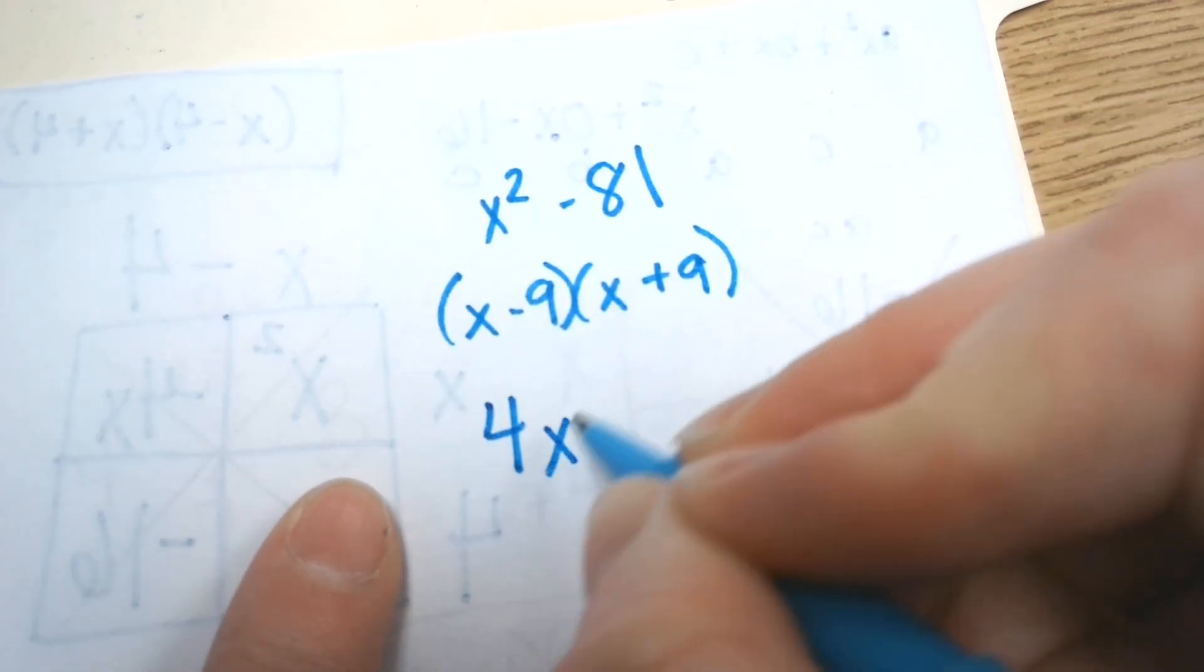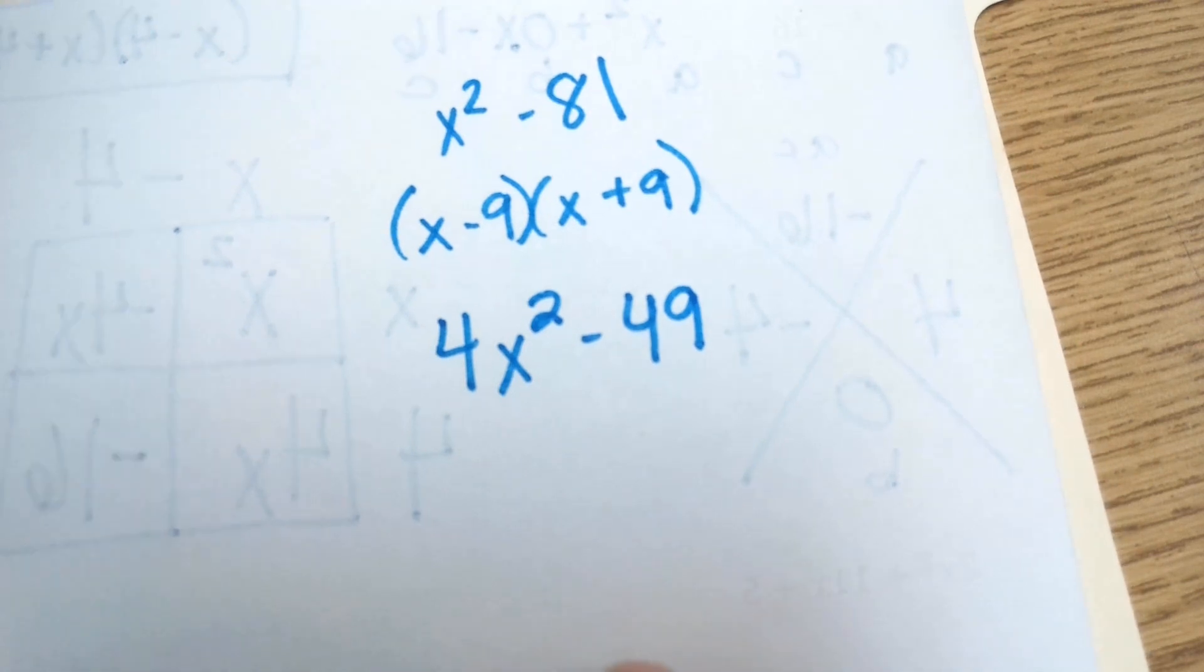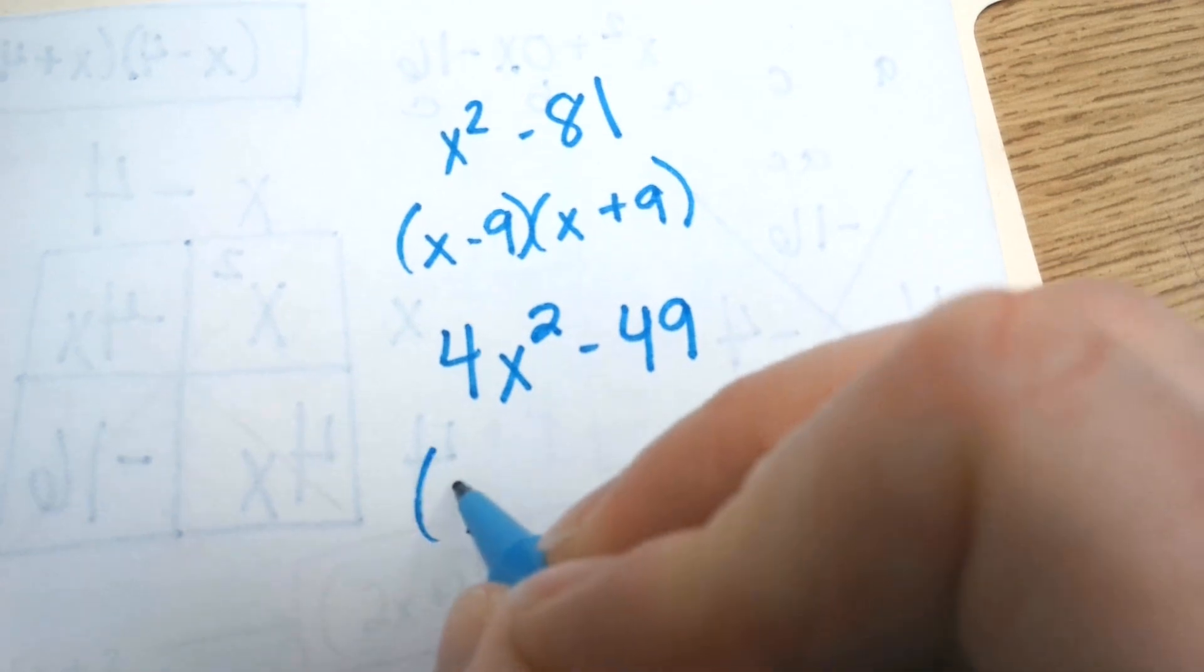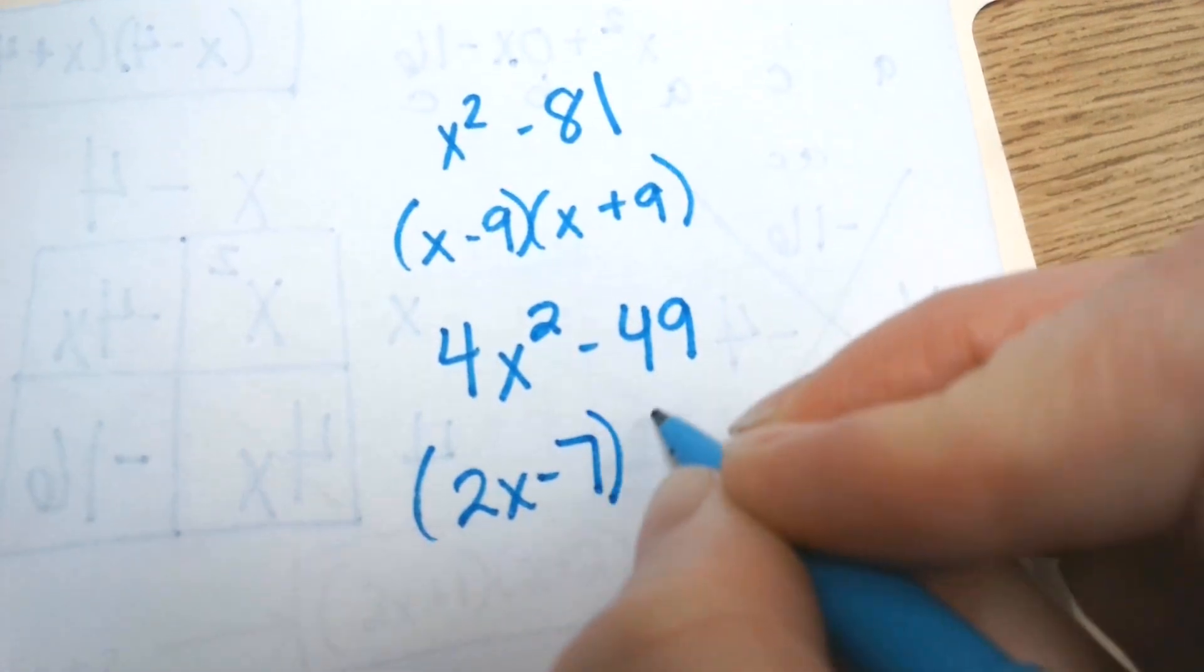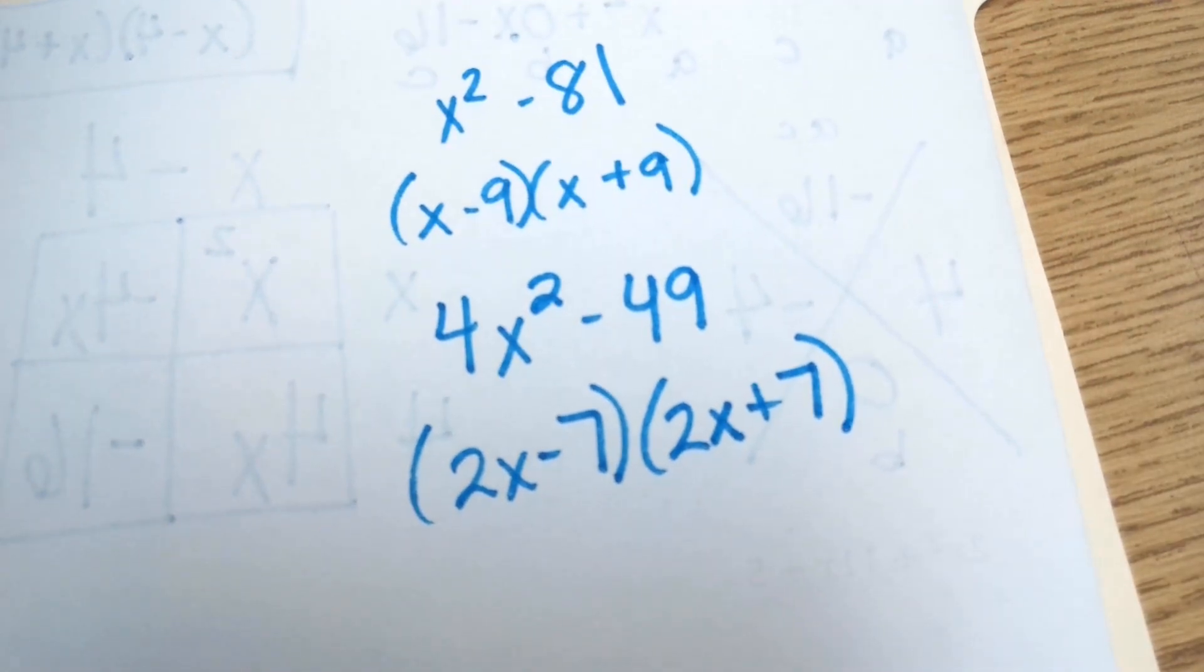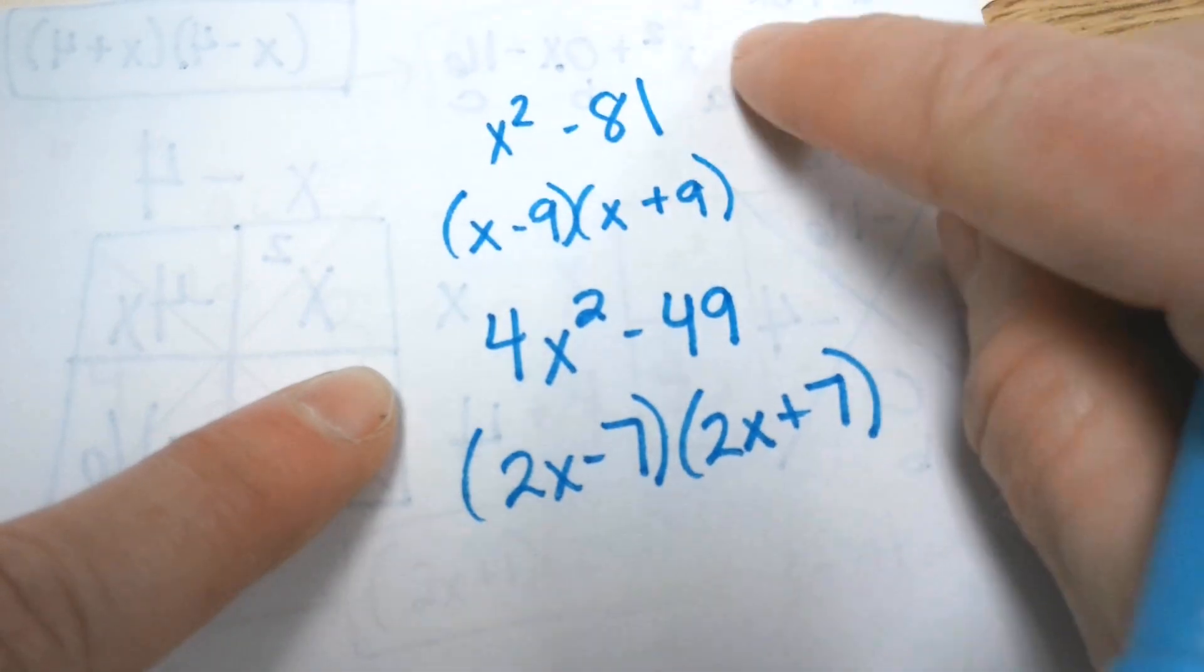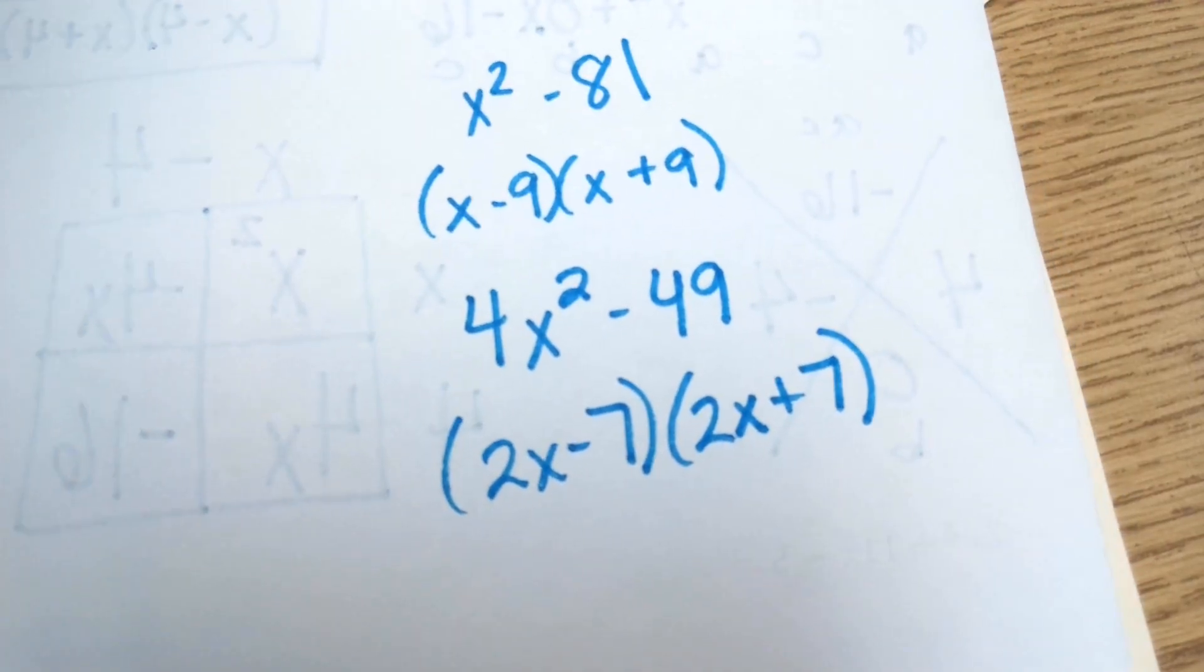And sometimes you'll see it like this: 4x² - 49. These are also called perfect squares. 4x² is a perfect square, because what times itself gives us 4? 2. So this would be 2x. What times itself gives you 49? 7. So one of them will be +7, one of them will be -7. These are the difference of perfect squares, because it's subtraction of two perfect squares. But you can always do Xbox if you don't want to memorize this or remember this. This is a shortcut for us that we can use, but we don't have to.